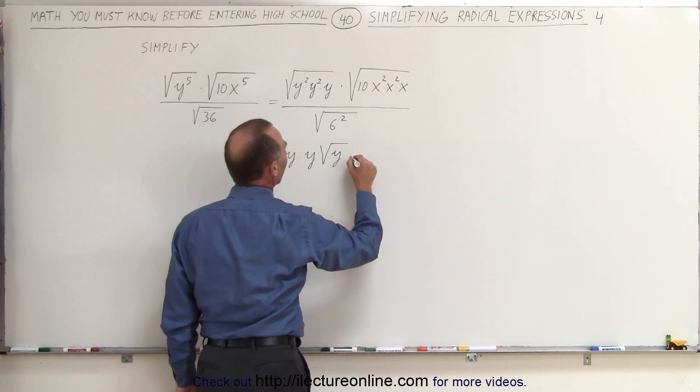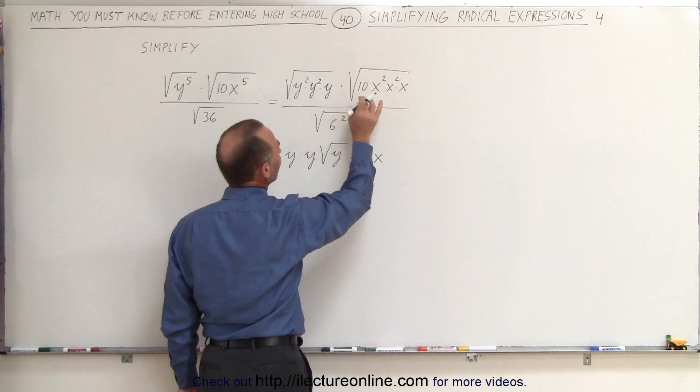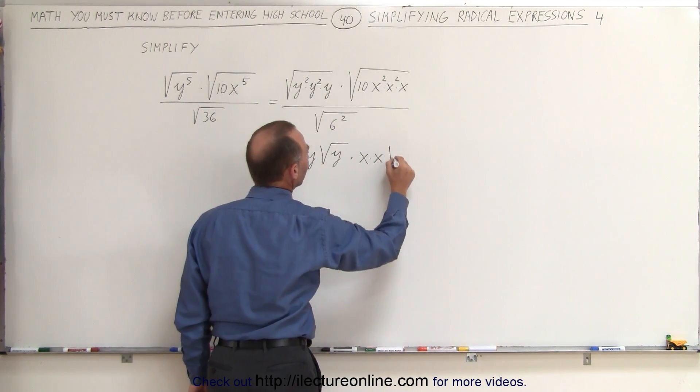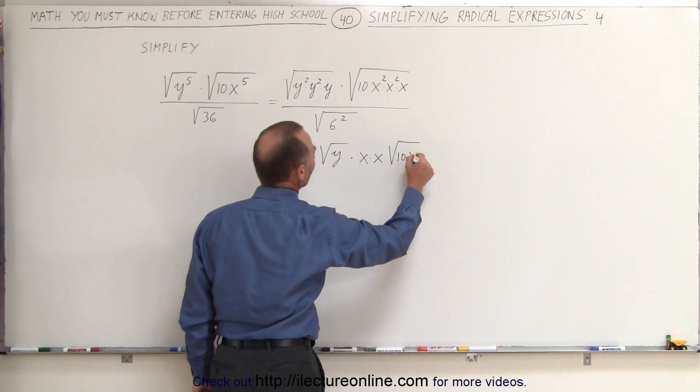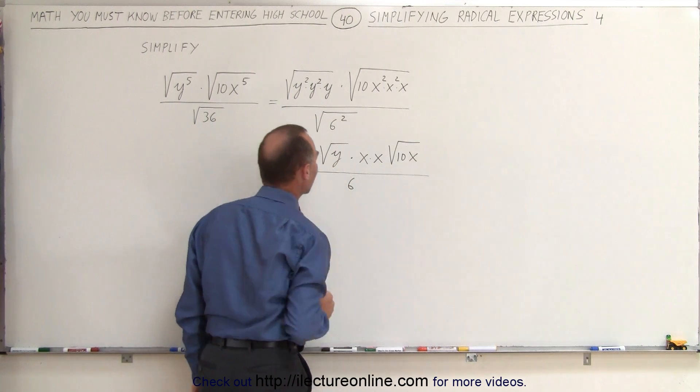Same over here, times x times x, because we could take those two outside the radical sign, but 10 times x needs to stay in, times 10 times x. And in the denominator we can take the 6 squared out, and this can simply be 6.